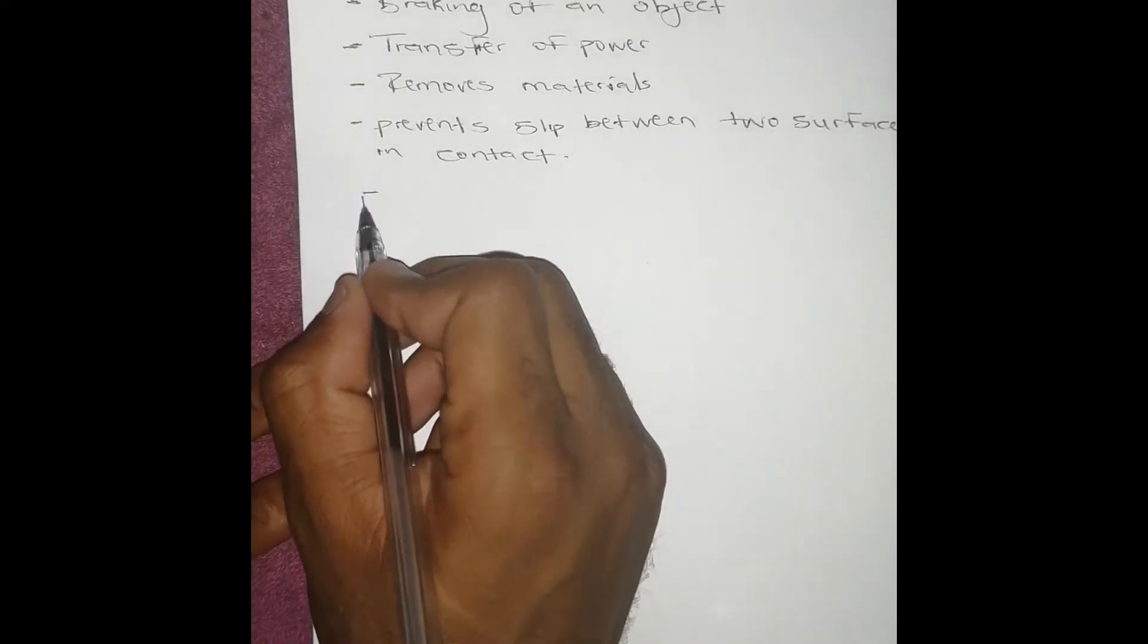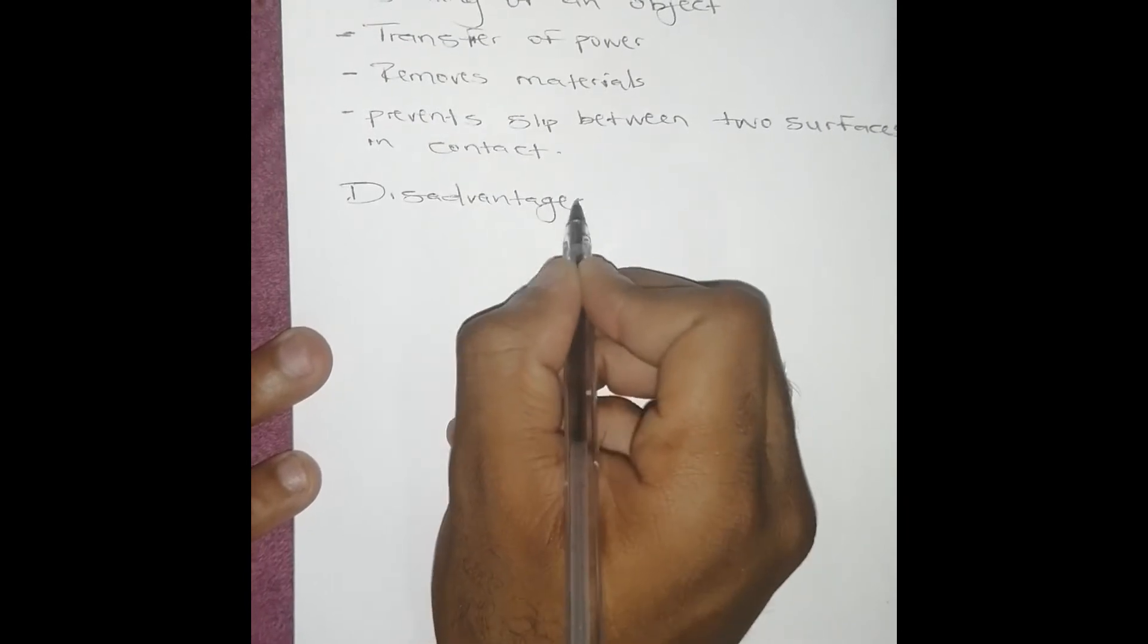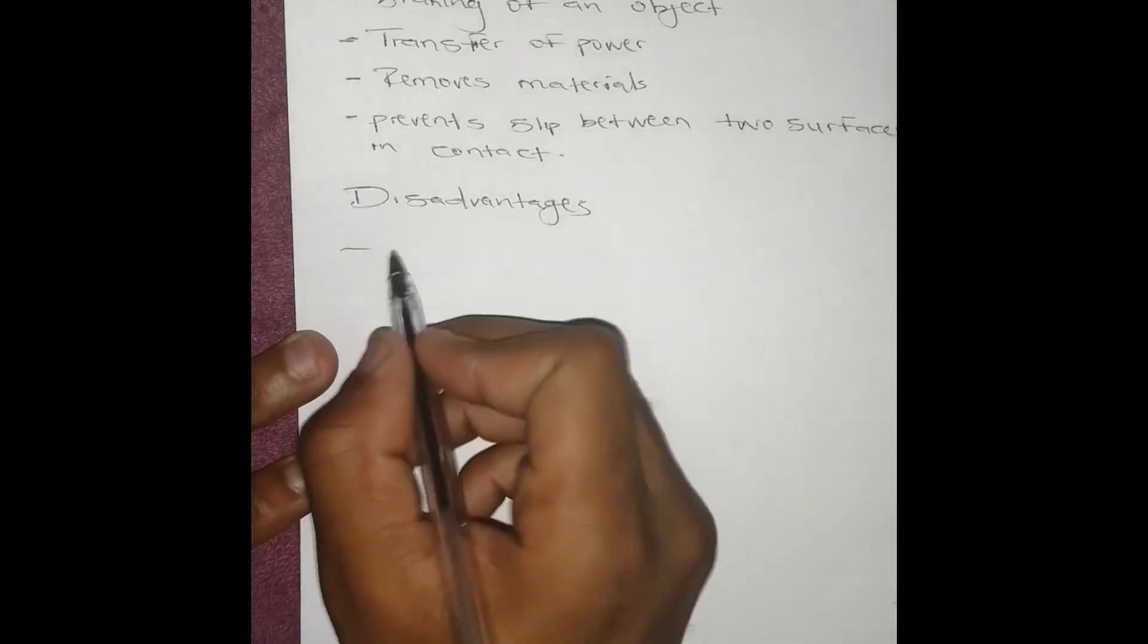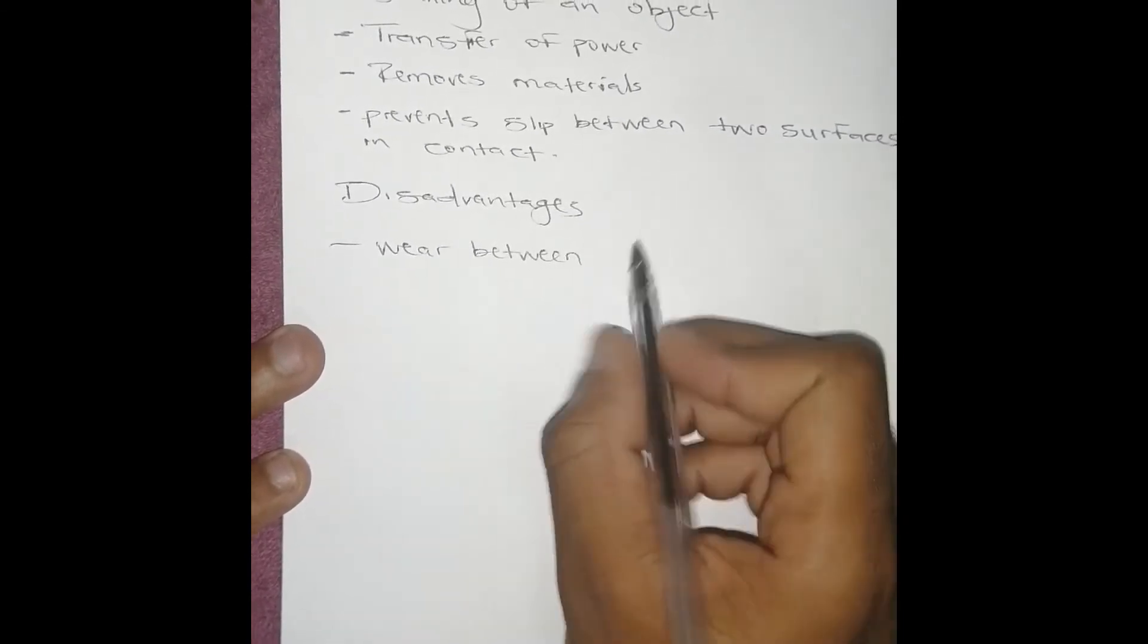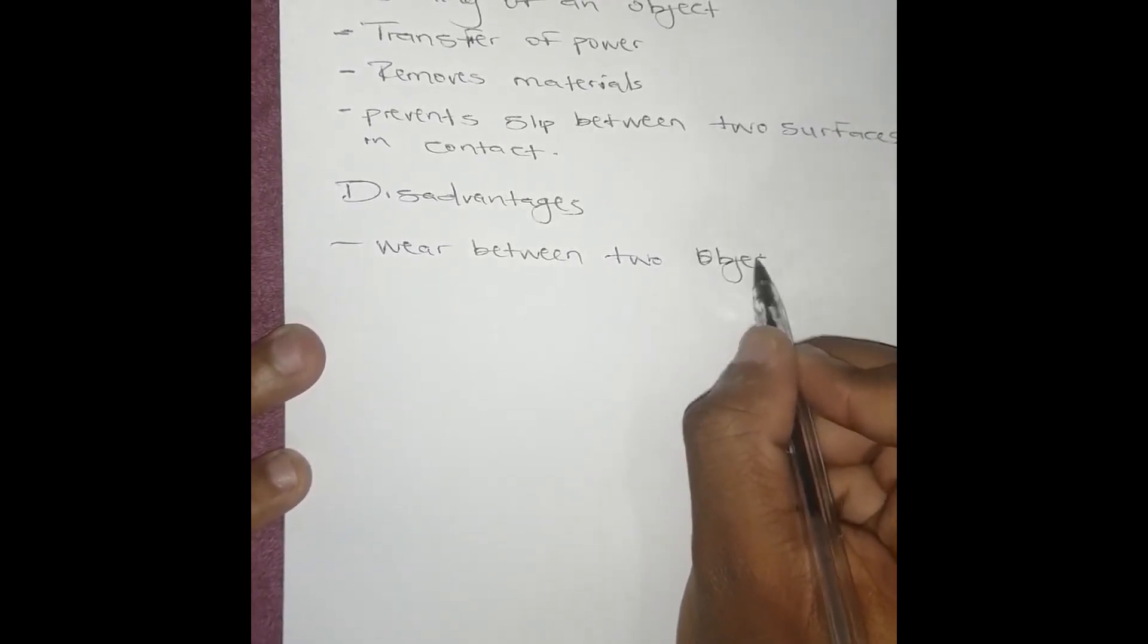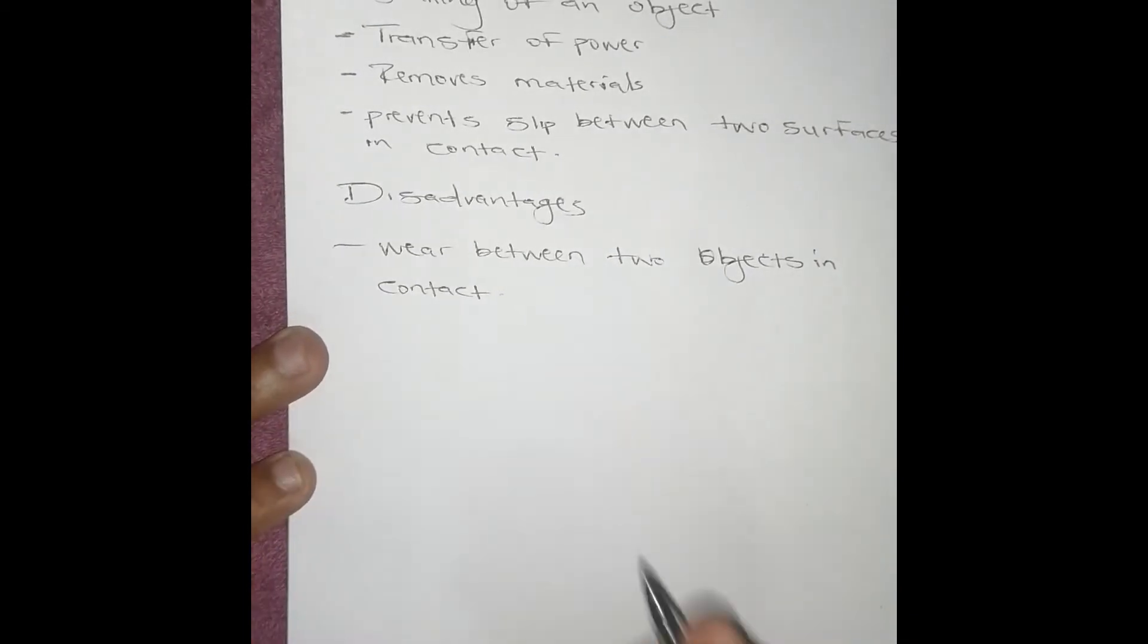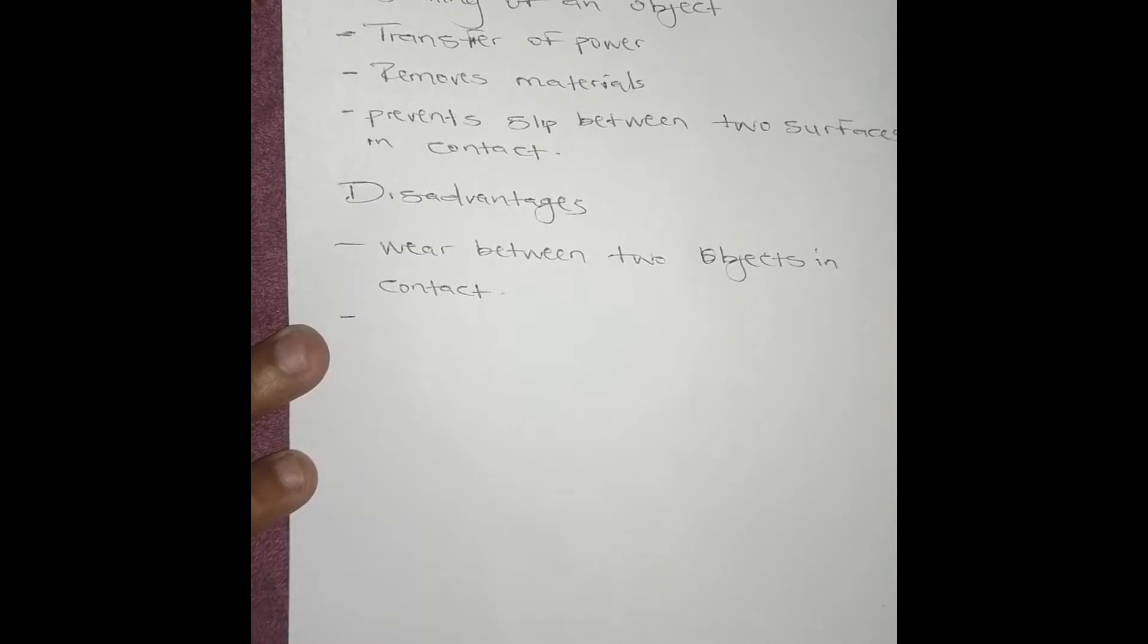And then the disadvantages. The first one is that it causes two surfaces that are in contact to wear off. It causes wear between two objects in contact and also causes objects to blunt off, like drill bits, scissors, and grinding discs.